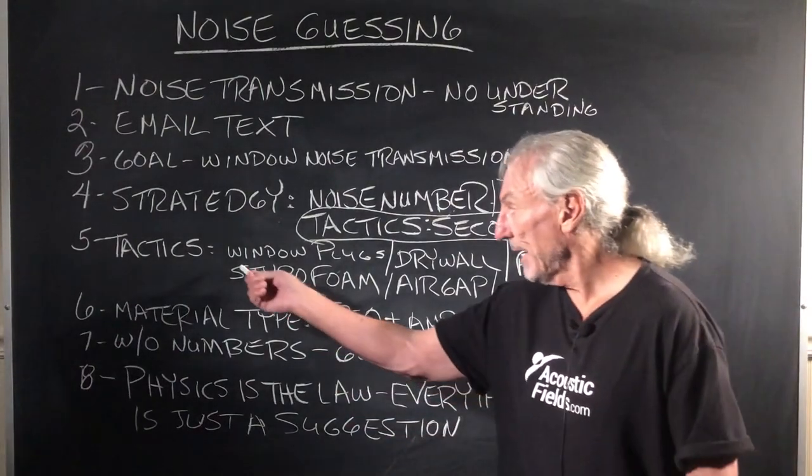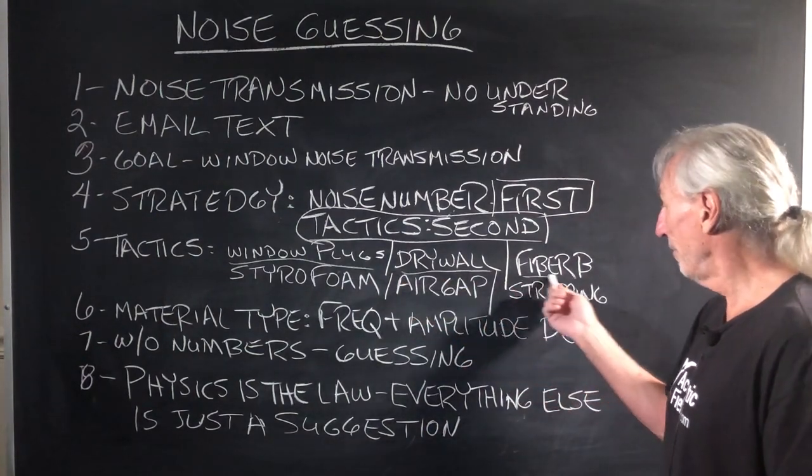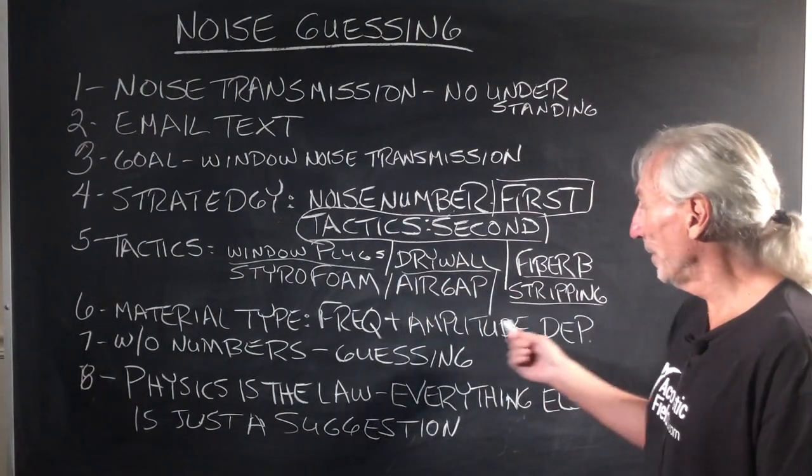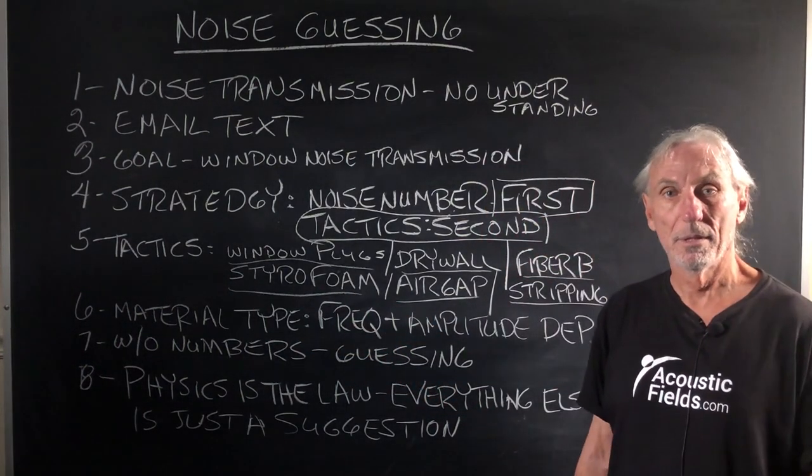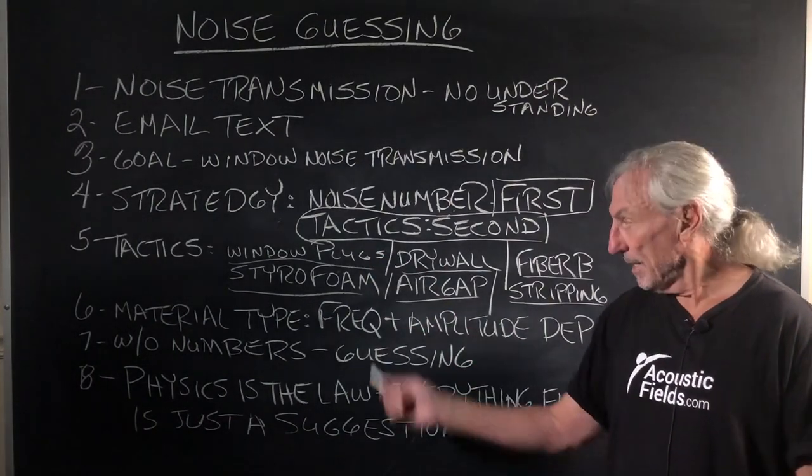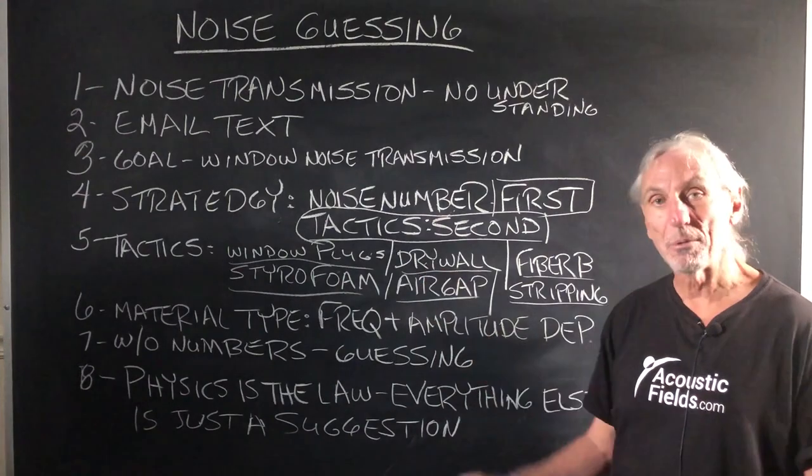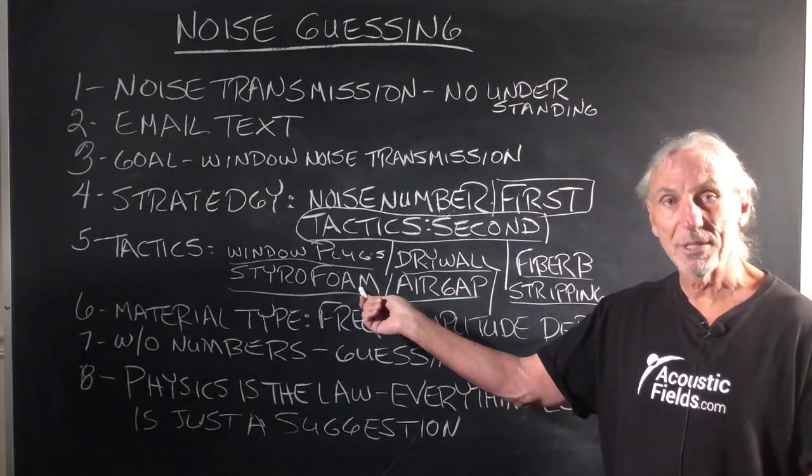Let's look at some of the tactics. Window plugs, drywall, fiberboard, molding, stripping, air gap, styrofoam. Lots of different tactics. Each one has a different frequency and amplitude that it works with. Drywall is different than styrofoam.